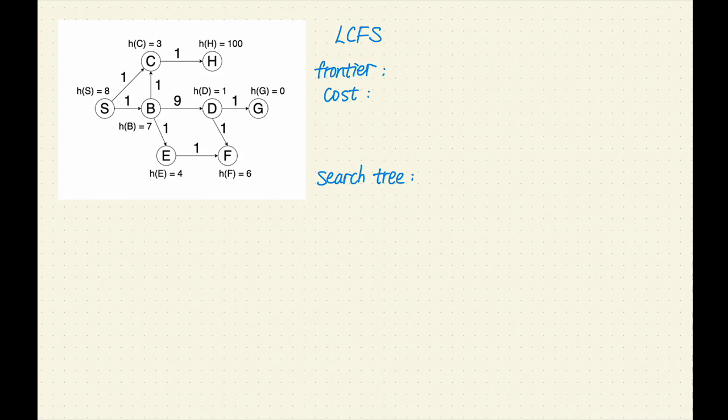Let's add the initial state S to the frontier and to the search tree. The path with the least cost is S. Let's remove S from the frontier. S is not a goal, so let's expand it. S has two successors, B and C.